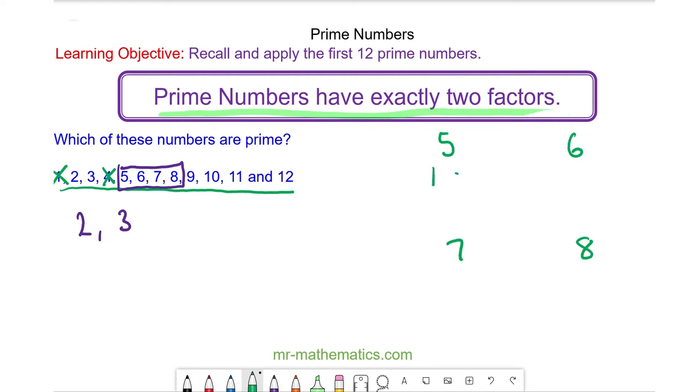The factors of five are only one and five, so five is prime. The factors of six are one and six, two and three, and this has four factors, so six is not prime.